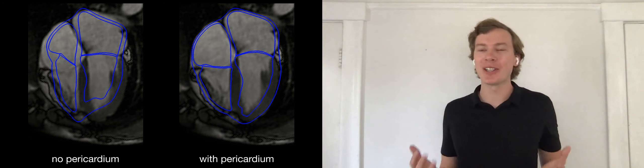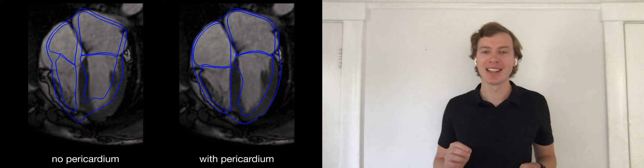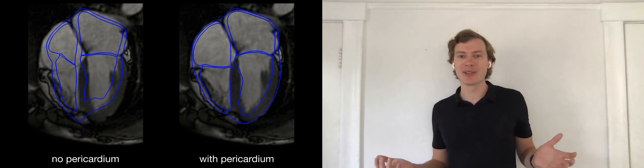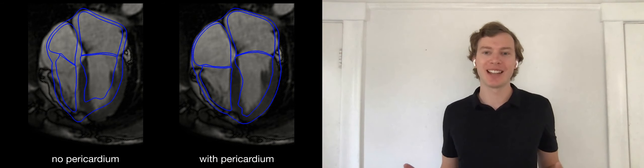So we can see that pericardial boundary conditions are essential to correctly predict the contraction of the heart. And this leads me to the final big question. Why do we even want to predict cardiac contraction?